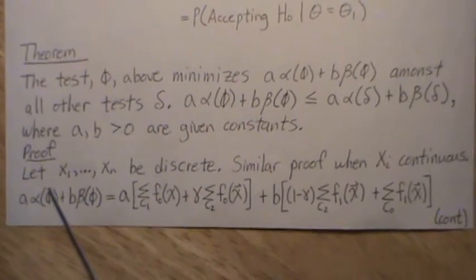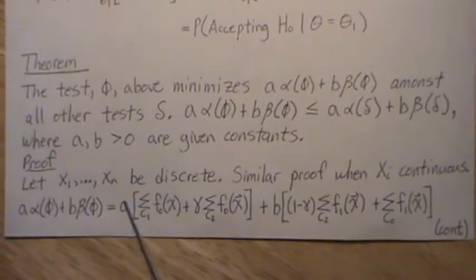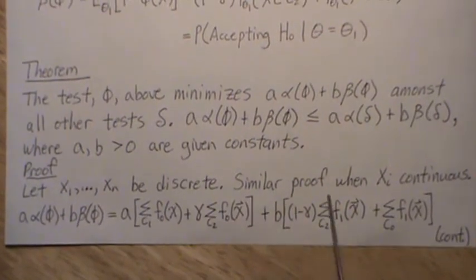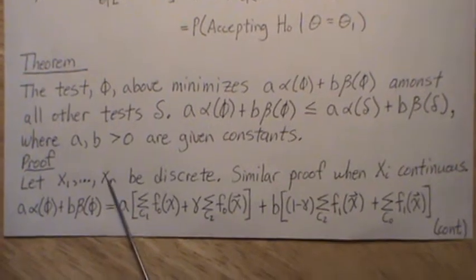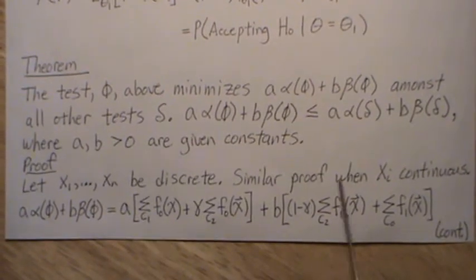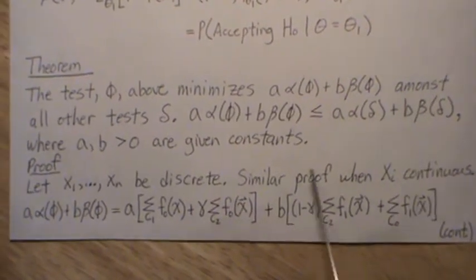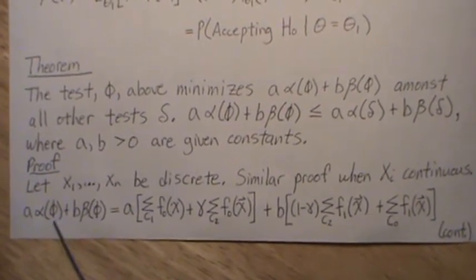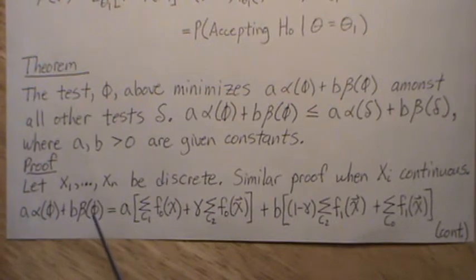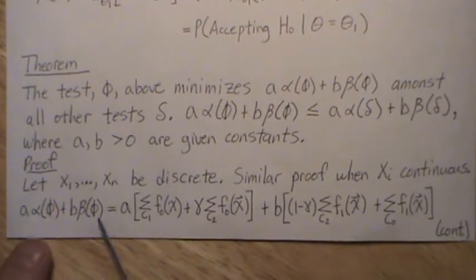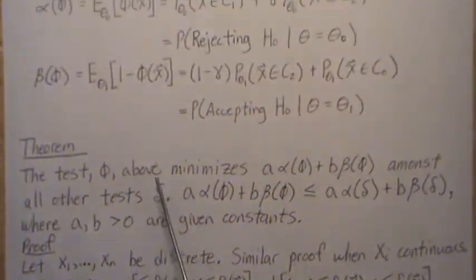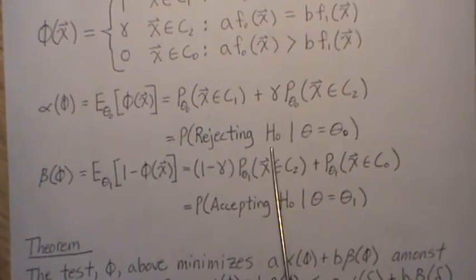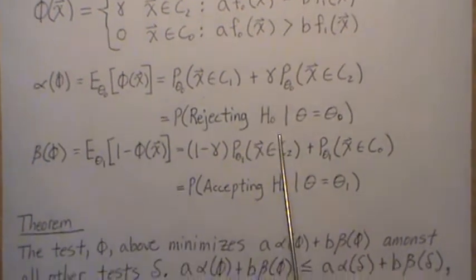So the proof goes like this. First, let's let our data be discrete. It's a similar proof when they're continuous. So instead of using summation signs, we use integral signs. So this linear combination, a times alpha of phi plus b times beta of phi is this. So how do you find alpha? The probability of rejecting. Since it's discrete, we can sum over all possible x's plus gamma times all possible x's where we would reject the null hypothesis.